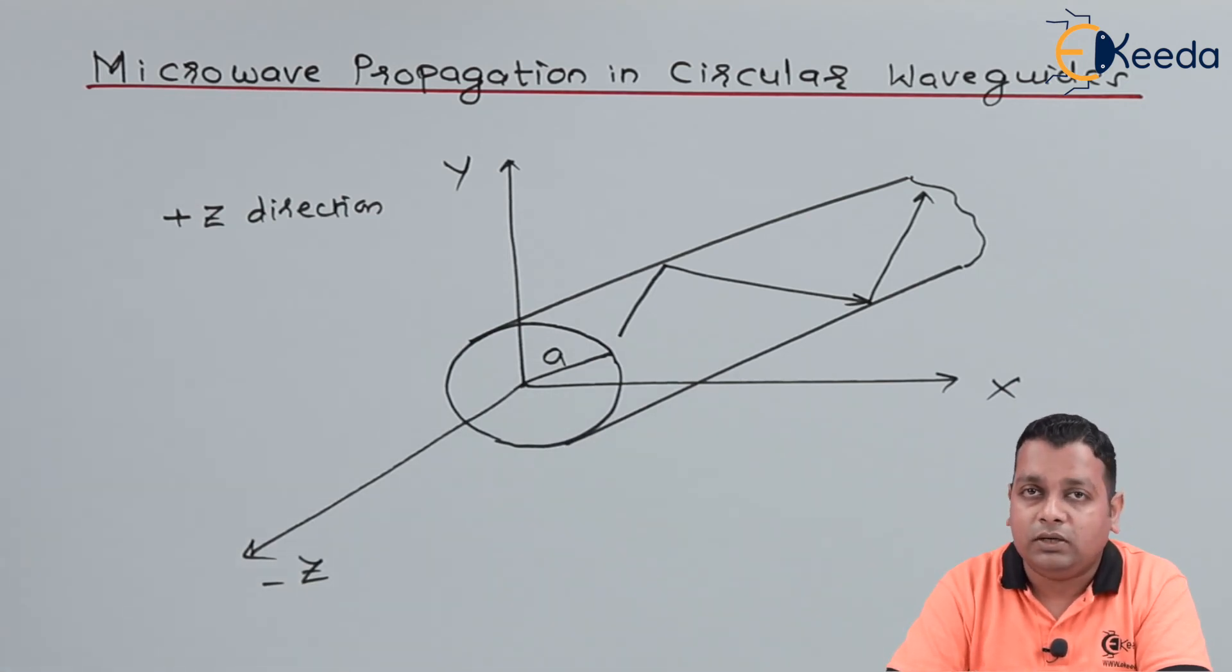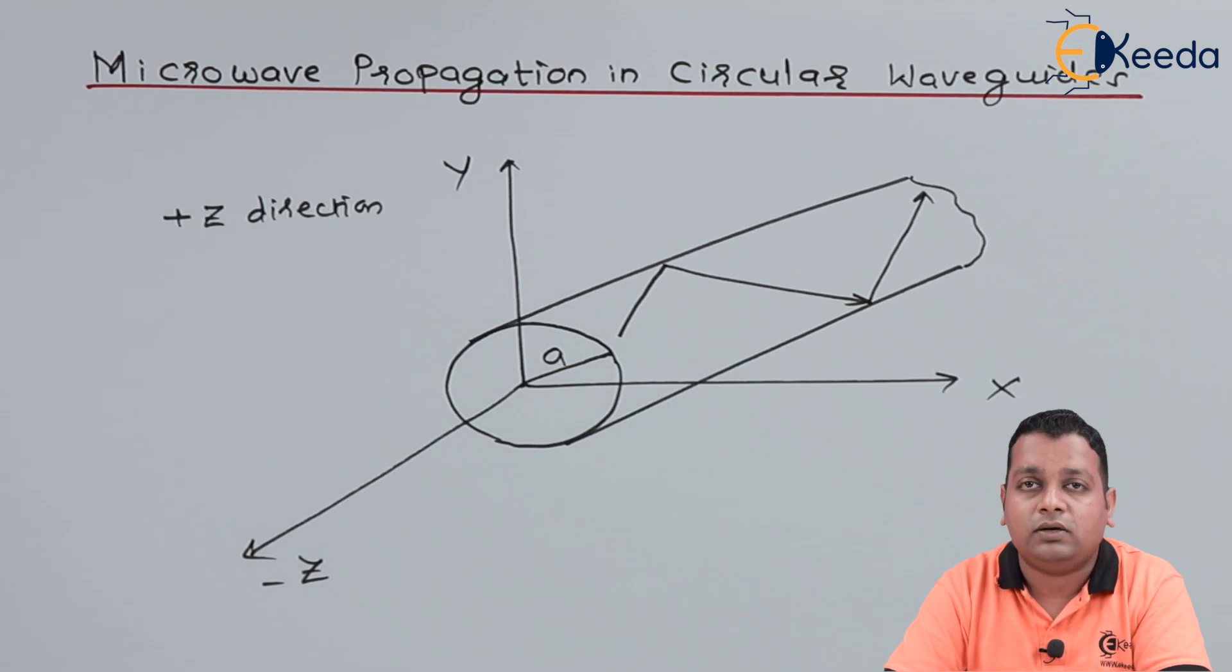So we shall be needing the help of boundary conditions to apply over finding the solution for the E and H vectors. So I hope the next lecture will describe you to get the details in more detail for circular waveguide.